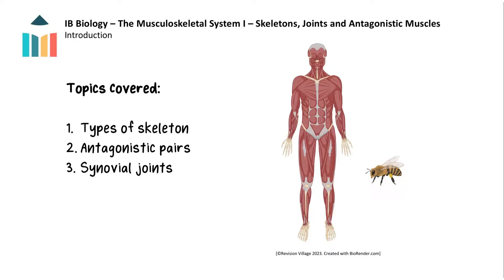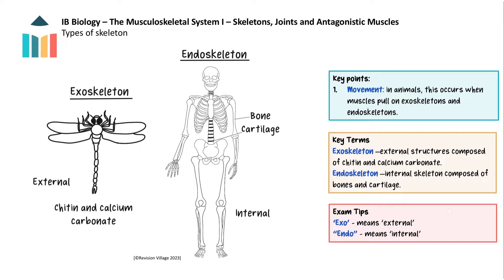In the video we will look at skeletons, how muscles work in antagonistic pairs and the structure of synovial joints. So let's start by looking at two types of skeleton: the exoskeleton and endoskeleton.